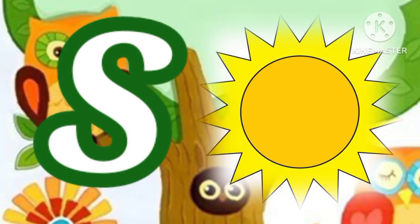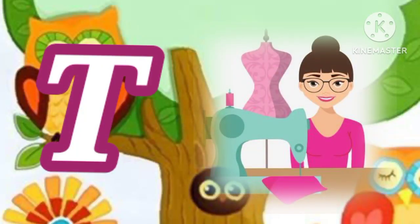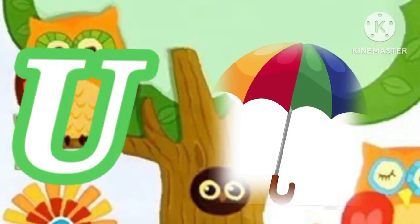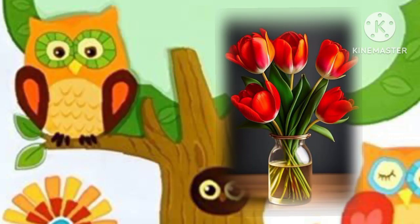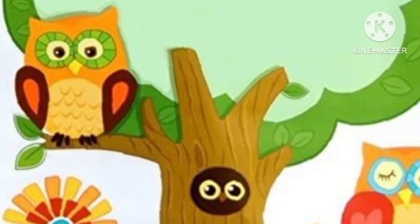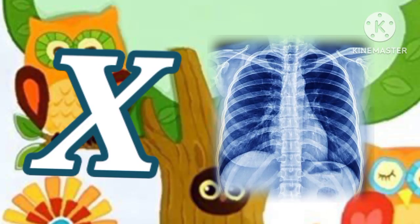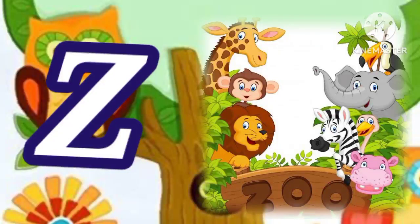S for sun, T for tailor, U for umbrella, V for vase, W for water, X for x-ray, Y for yellow, Z for zoom.